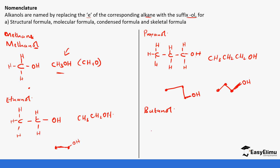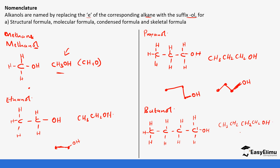The fourth member is butane and it becomes butanol — four carbons. For the condensed formula, it would be CH₃, CH₂, CH₂, CH₂, OH. For the skeletal formula, we have four carbons: first carbon, second carbon, third carbon, fourth carbon. On the fourth carbon we have the OH.